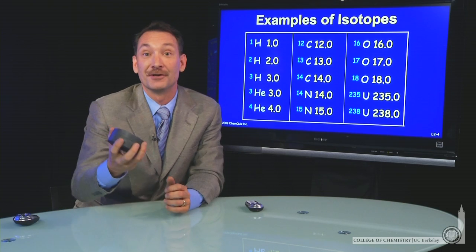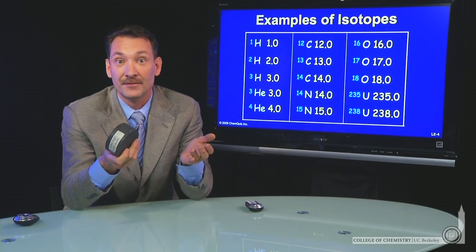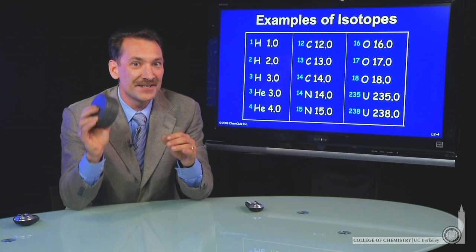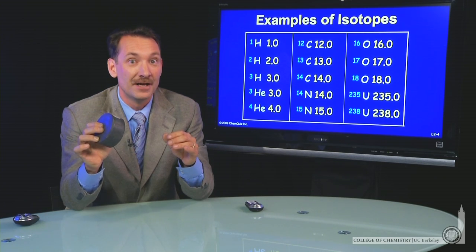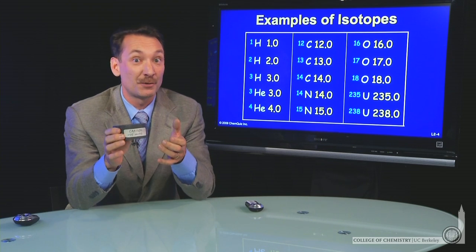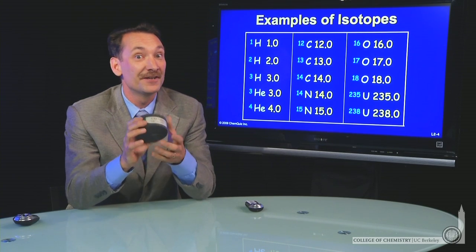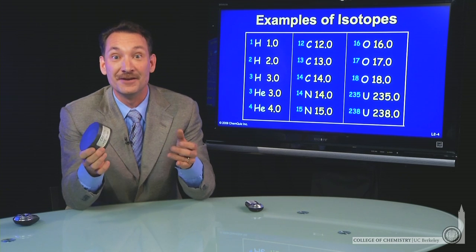Take this piece of carbon, for instance. This piece of carbon is what we call pure carbon. But that doesn't mean that every single atom is exactly the same. Some of the atoms in this piece of carbon have six protons and six neutrons, and some of the carbons have six protons and seven neutrons.